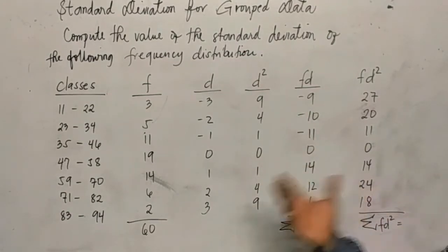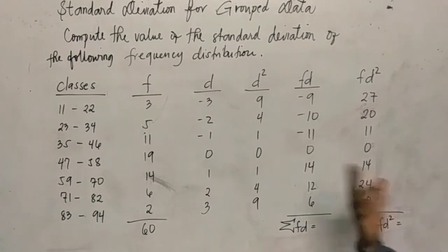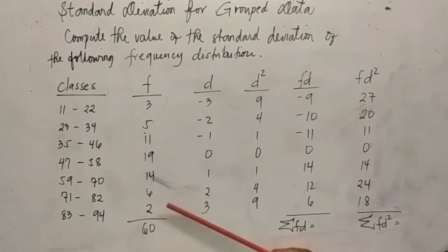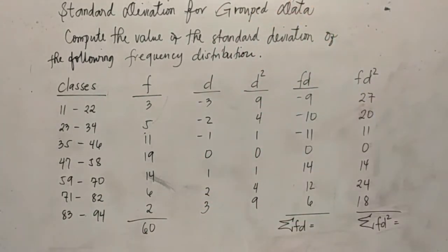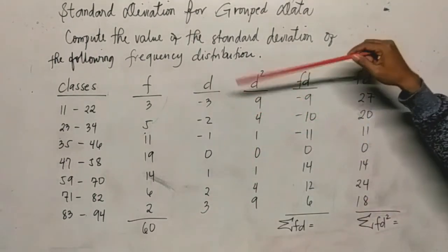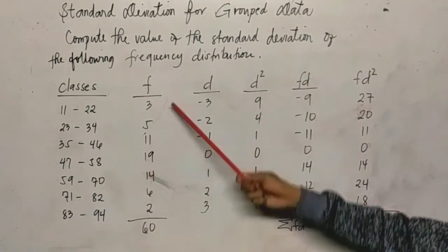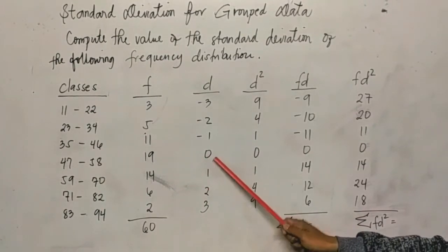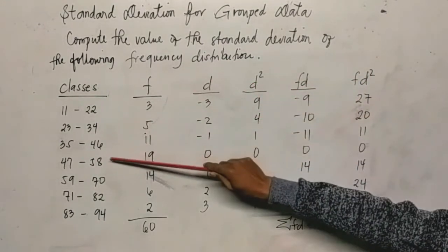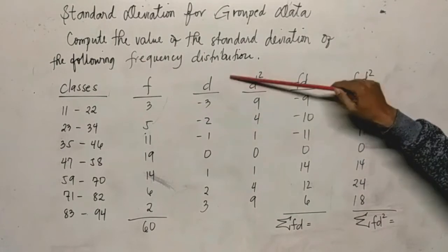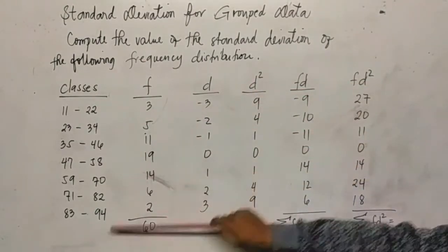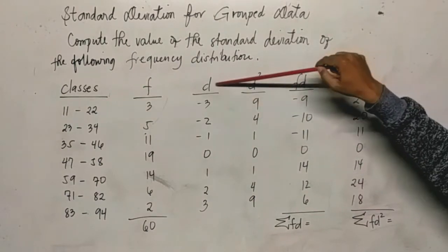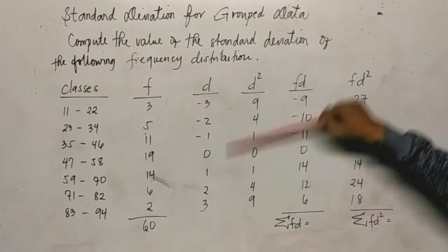How do we get the mean or standard deviation for grouped data from this frequency distribution? If we look at the formula, there's d, which is the unit deviation. If you remember from the mean unit deviation method, we start with zero at the highest frequency, which is 19. Then going upward to the lower limit, those become negative. And going down to the upper classes, those become positive. So zero, negative one, negative two, negative three. That's our d, our deviation.